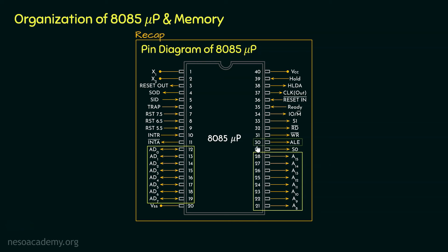Apart from these two sets of pins, we will also need output pin 30, which is ALE. The reason for this is that in the case of the 8085, pins 12 to 19 are multiplexed — they can work as either part of the address bus or the entire data bus. So to specify whether they are carrying data or address, we need output pin 30, that is ALE.